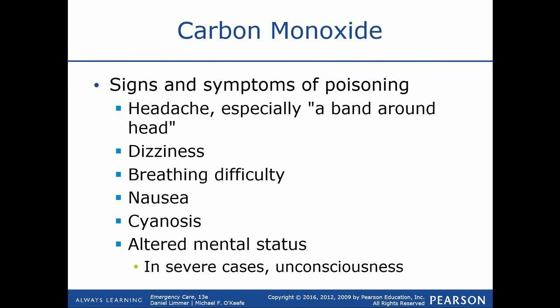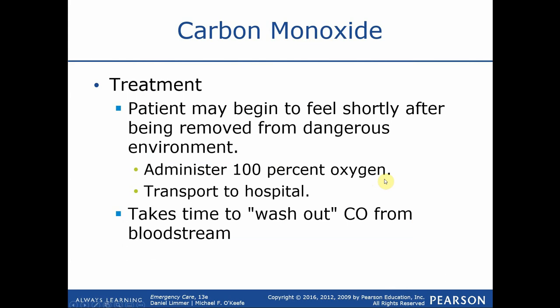Treatment for carbon monoxide poisoning: priority one is getting the patient out of the environment; priority two is administering high-flow oxygen; priority three is transport. Protocols may also instruct you to transport or fly the patient to a hospital with a hyperbaric chamber, which takes them down to pressure and pushes the carbon monoxide out of the tissues, allowing it to be excreted.